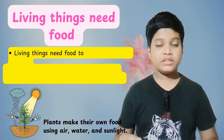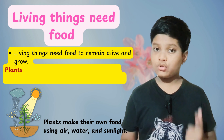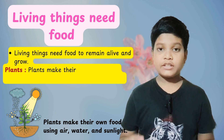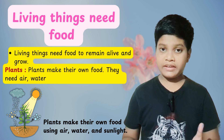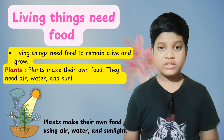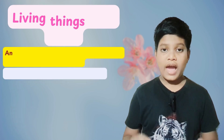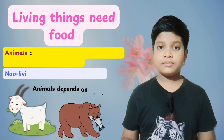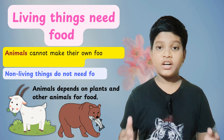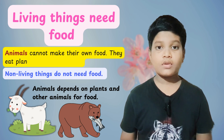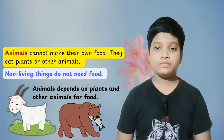Living things need food to remain alive and grow. Plants make their own food; they need air, water, and sunlight to make food. Animals do not make their own food; they eat other plants or animals. Non-living things do not need food.